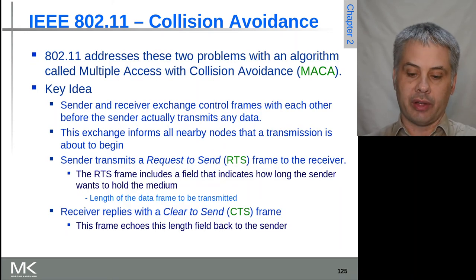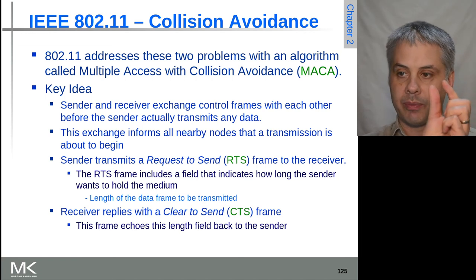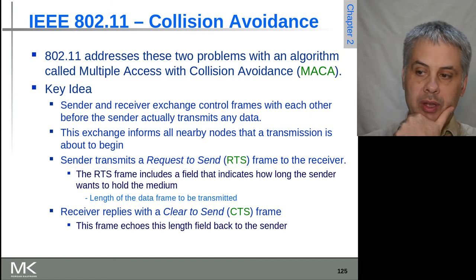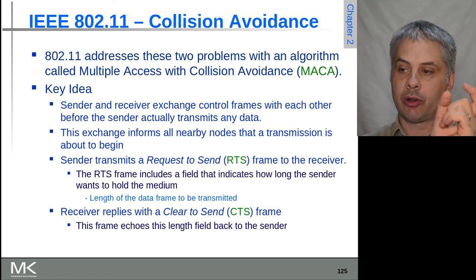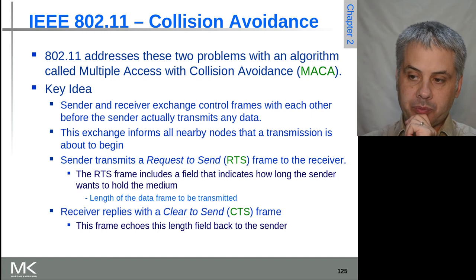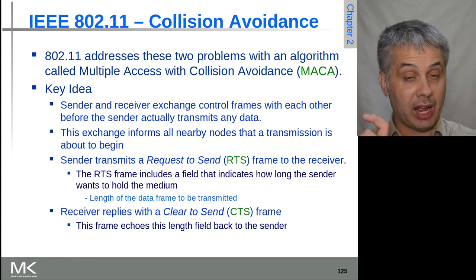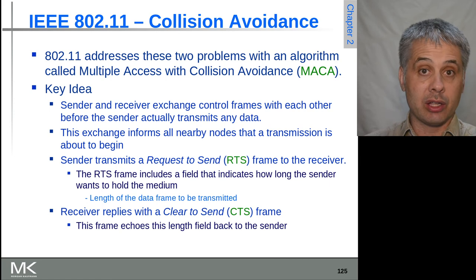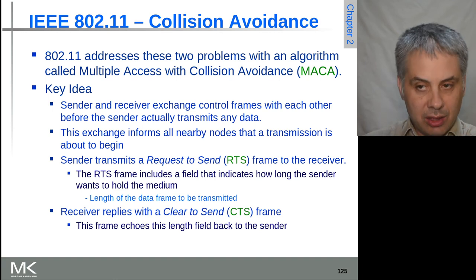The method 802.11 uses to minimize these impacts is Multiple Access with Collision Avoidance (MACA). The sender and receiver exchange a short control frame before any data is transmitted, letting nearby nodes know a transmission is coming so they can avoid collisions. The sender transmits an RTS (Request to Send) frame to the receiver, including how long it will need the airtime. The receiver replies with a CTS (Clear to Send), confirming the RTS got through — if no reply is received, the sender won't transmit. The CTS frame also contains the duration, so any node hearing it knows to stay quiet.